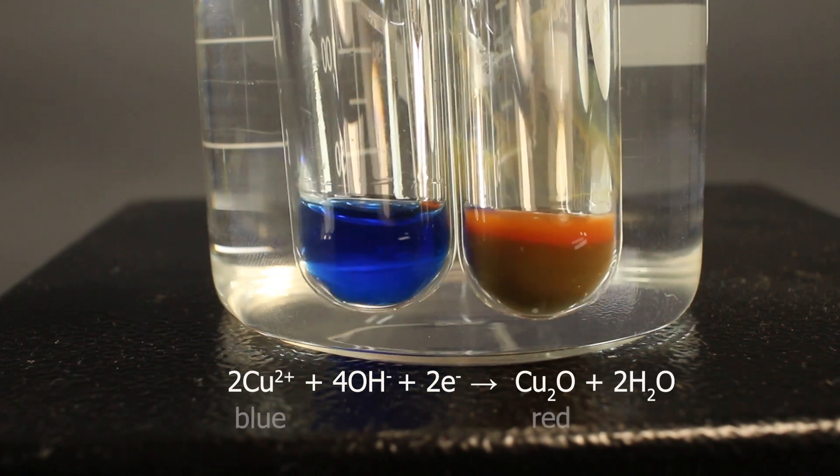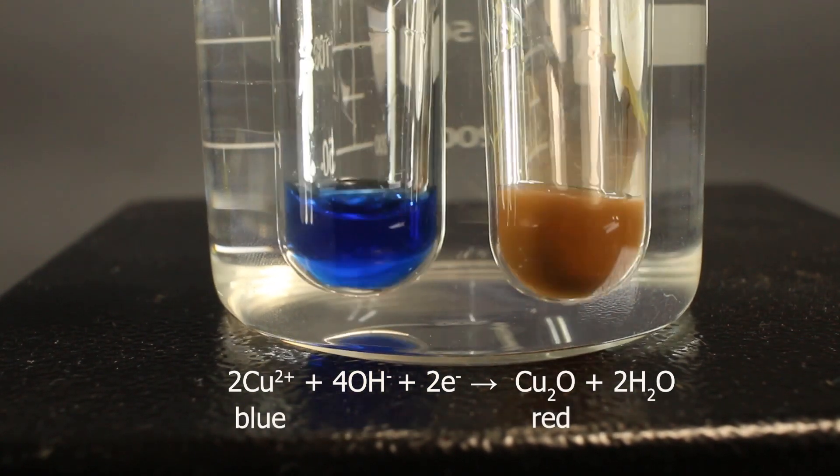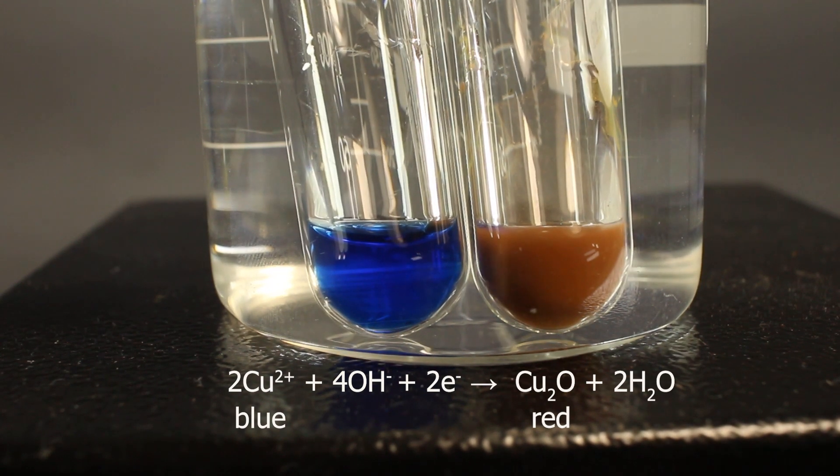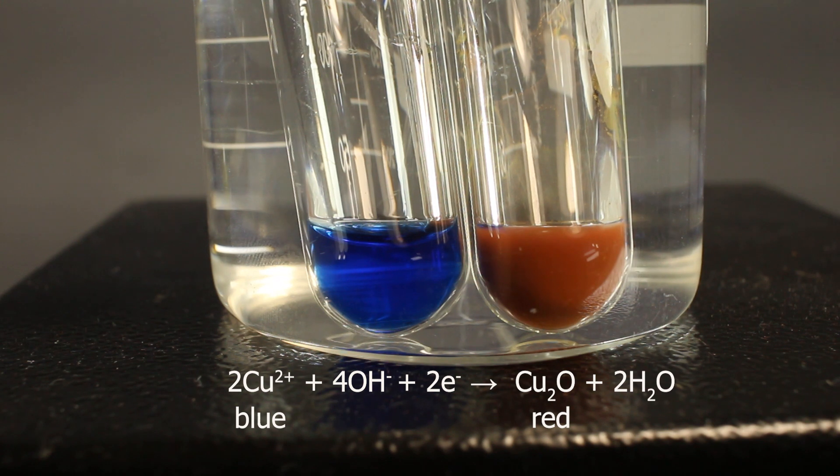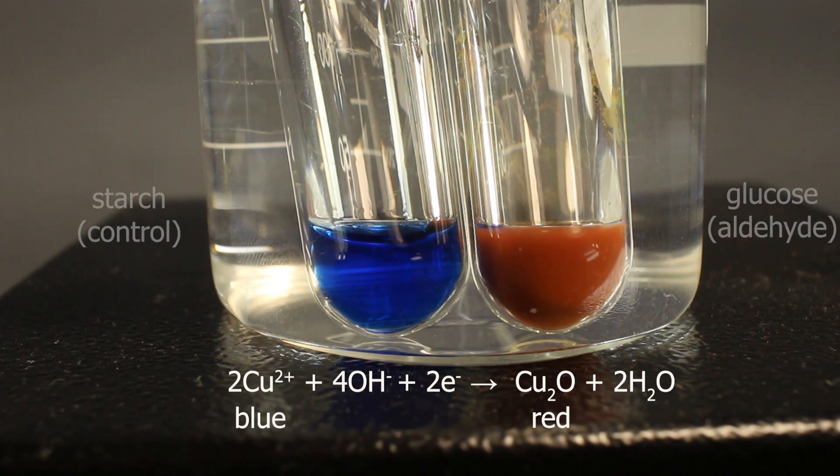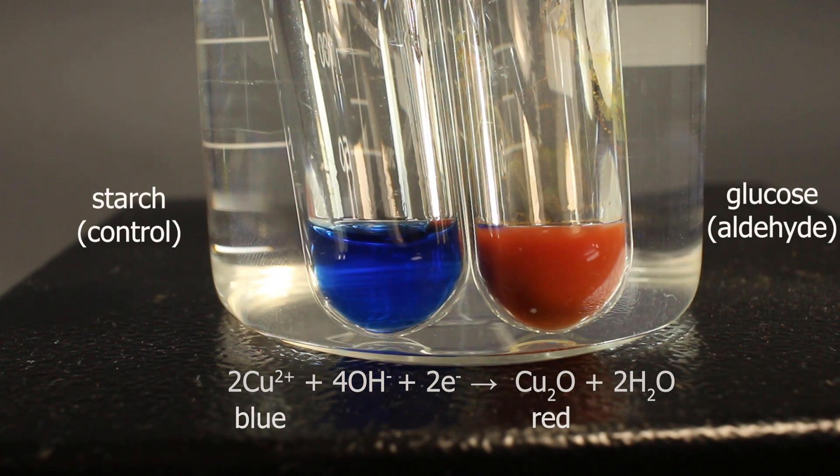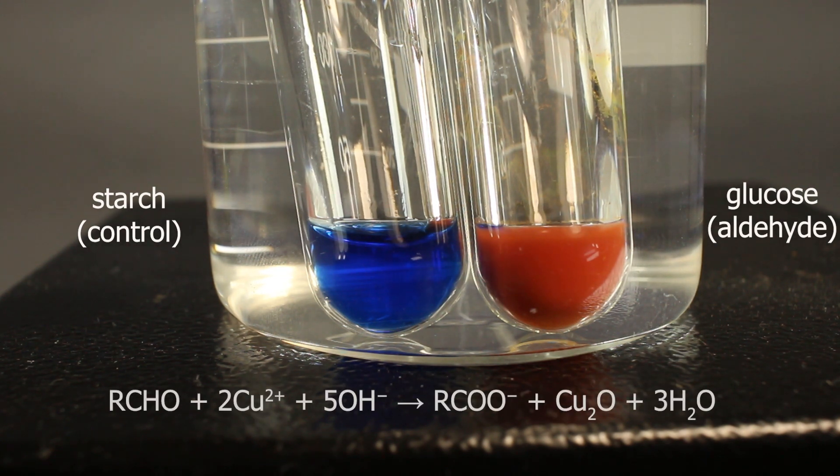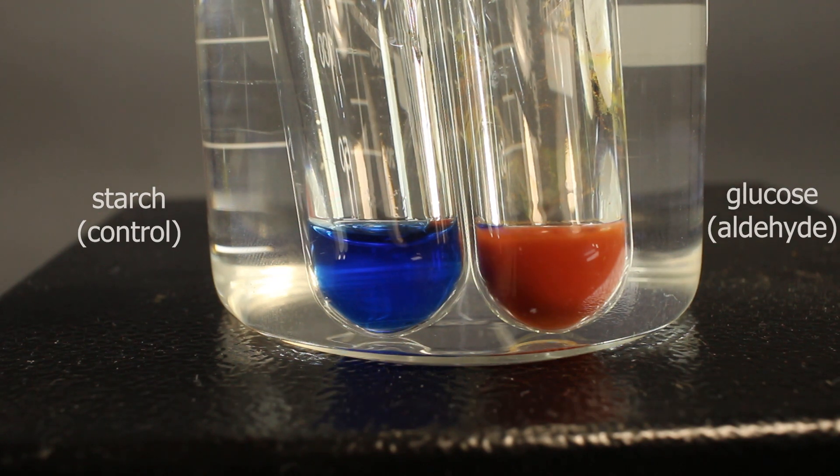It's very weak oxidizing agent, so our test is for very strong reducing ones, aldehydes. When copper 2 ions receive the electrons, one electron each, they turn into copper 1 oxide, which is brown in the beginning, or red if we run this reaction for long enough time.